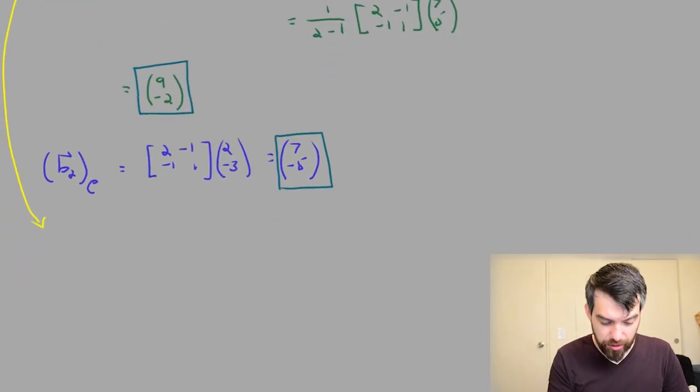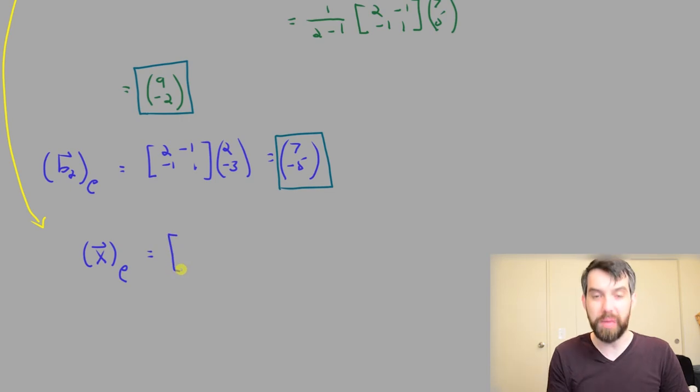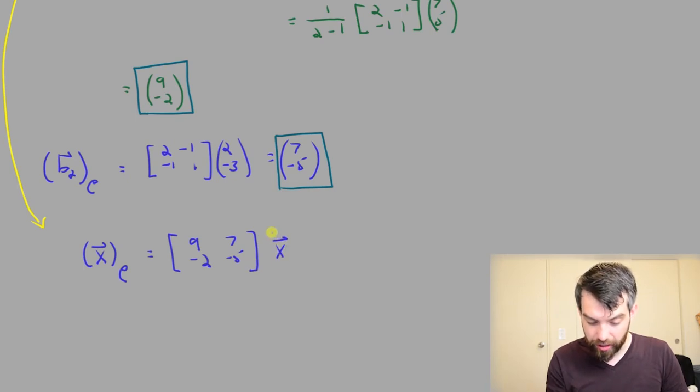I'm going to get my result that if I want to take any vector x and I want to write it in the C basis, what is it going to be? Well, it's the B1 in the C basis, this 9 minus 2. And then the second column is going to be the B2 in the C basis, so the 7 minus 5. And then I'm going to put in the vector x given in the B basis.